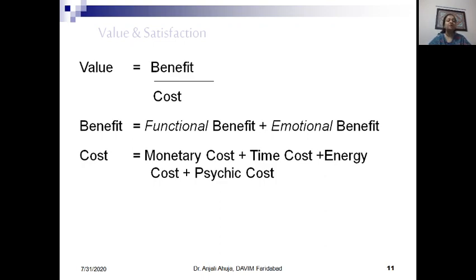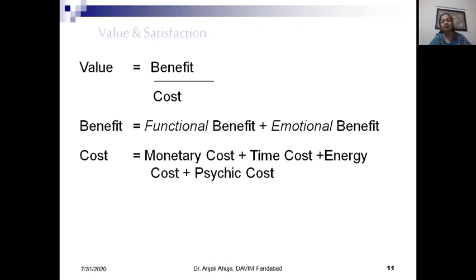Now the cost part. Cost for a product is not only the monetary cost — it also includes time cost spent while purchasing, gathering information, and evaluating the product. Then there is energy cost: how much energy was consumed while buying. For instance, if I have been searching for a product for ten days — in markets, showrooms, and on the internet — that energy is added to my cost. And psychic energy, the mental fatigue faced while searching, evaluating, and purchasing, is also included. By analyzing benefit over cost, we find the value of the product.